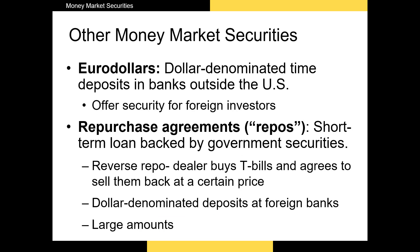Next, we have eurodollars — deposit accounts overseas where investors deposit U.S. dollars. Some foreign investors might not want to hold their home currency, especially if it is depreciating rapidly. Investors in countries like Turkey, Brazil, Venezuela, and Zimbabwe invest heavily in eurodollars if they can. Finally, we have repurchase agreements, or repos for short. Repos are securities backed by the U.S. federal government in which a broker-dealer agrees to buy T-bills today and sell them back at a later date for a certain price. Dealers that buy repos are betting they can't get a better return with a similarly risky asset over the same period.